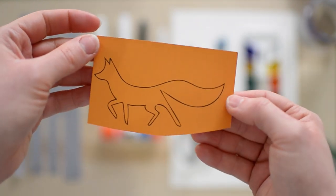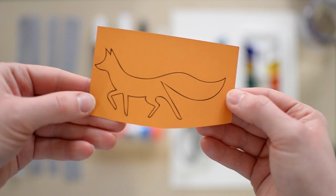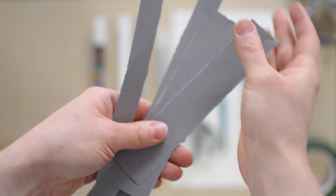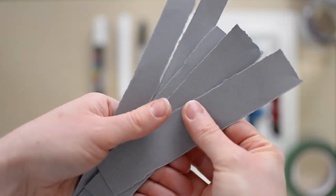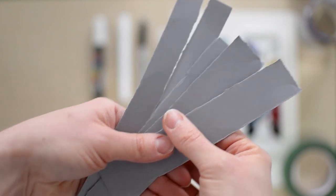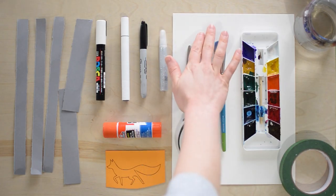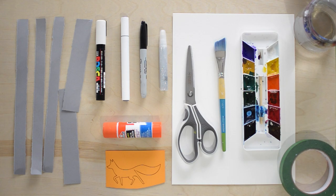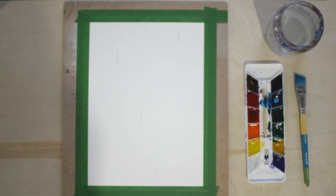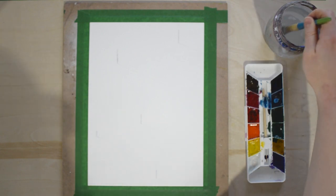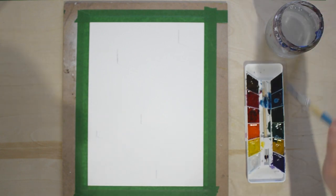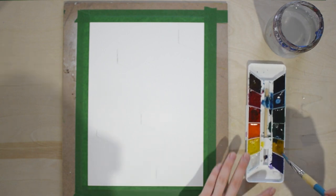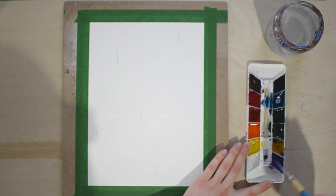You'll need an orange piece of paper to print off this fox outline, and then you'll need one, two, three, four strips of gray paper. And of course some watercolor paper. To start, we're going to tape up our watercolor paper with the green painter's tape. You can just tape it right onto your table. I have a piece of board but that's not necessary.